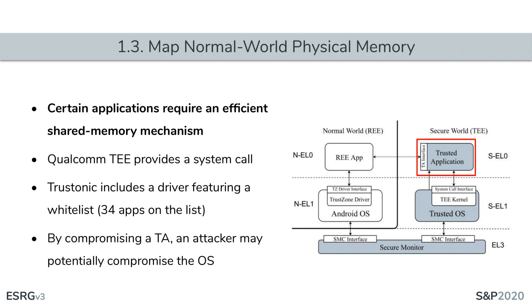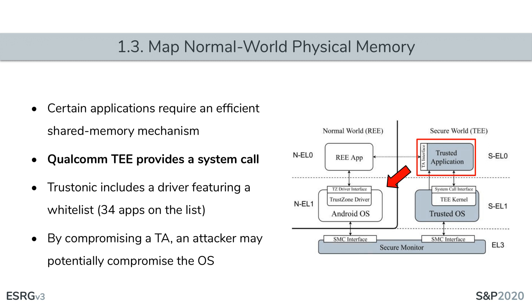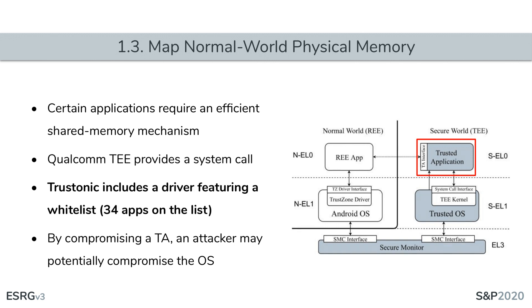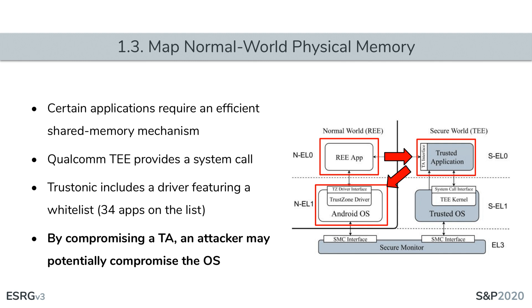Trusted applications being able to map normal world physical memory helps compromise TEs or the system. Certain applications require an efficient shared memory mechanism for exchanging high volumes of data across worlds with low latency. For example, the Qualcomm TE provides a system call that allows any trusted application to map any physical memory belonging to the normal world, including the normal world kernel. The Trustonic TE uses a whitelist-based driver approach, but that whitelist is hard-coded and the number of allowed trusted applications reaches 34. Mapping the normal world can easily be abused for privilege escalation.